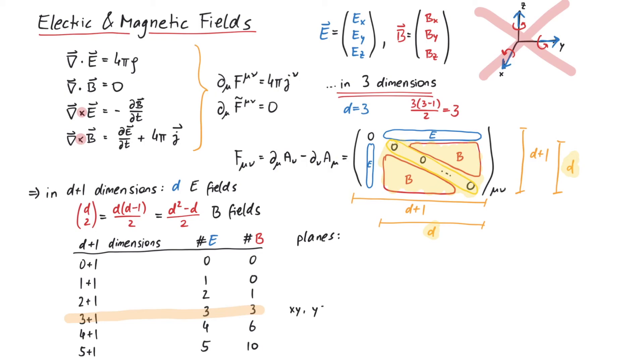The xy plane, the yz plane, and the xz plane. If you look at it this way, the numbers do make sense. In two dimensions, there is only the xy plane, therefore only one B field exists.